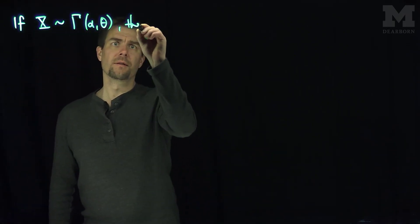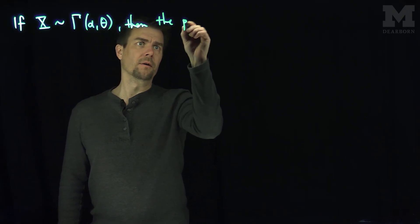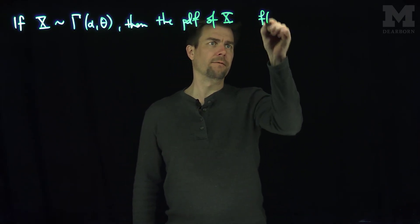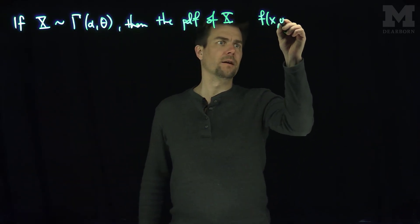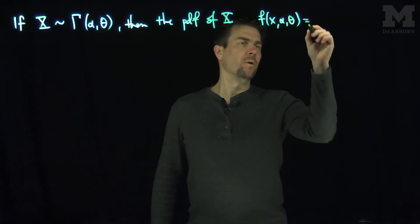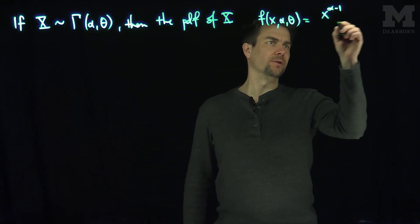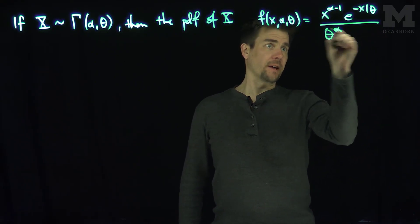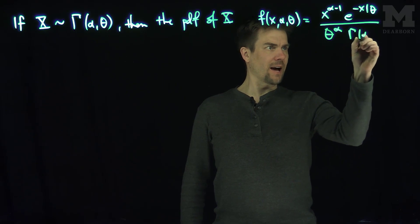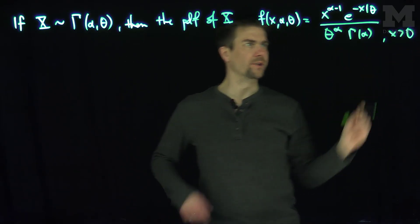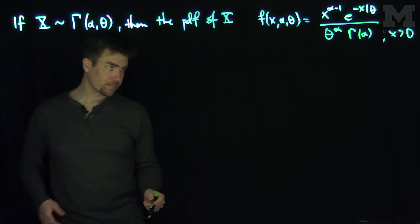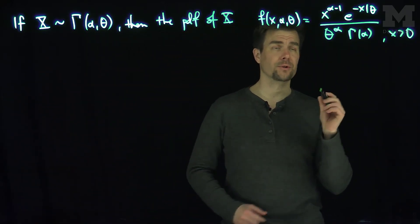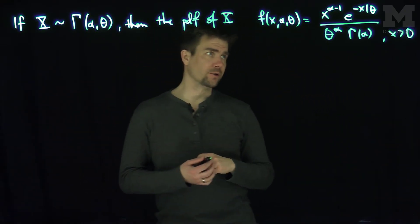this implies the PDF of x has the form f of x, depending on alpha and theta, equal to x to the alpha minus one, times e to the negative x over theta, over theta to the alpha, times gamma of alpha, for x greater than zero. Gamma distributions include a special case: when alpha is equal to one, you have an exponential distribution, so gamma(1, theta) is an exponential distribution.